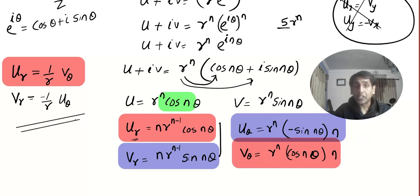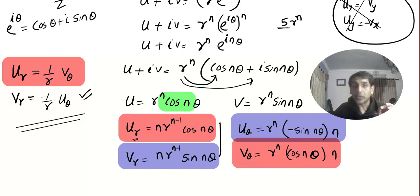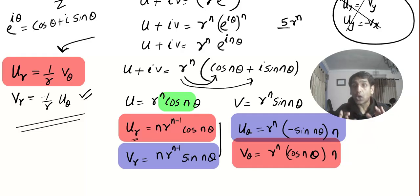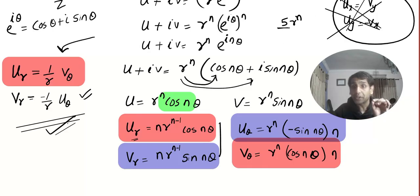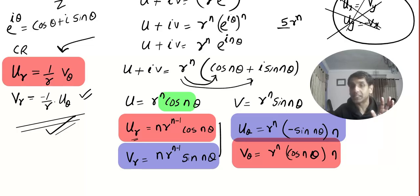Also, the CR equation in polar coordinate system is u_r = (1/r)v_θ and v_r = −(1/r)u_θ. Please note this down — this is the Cauchy-Riemann equation in the polar system.